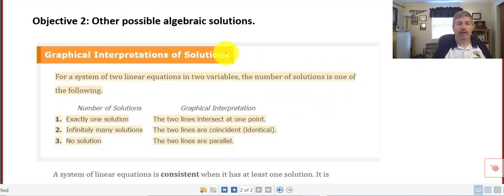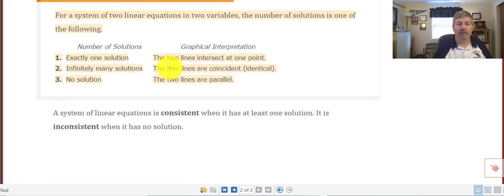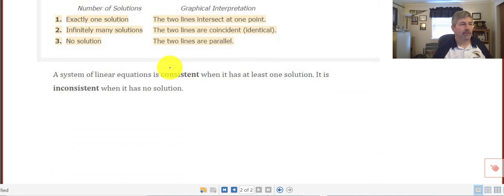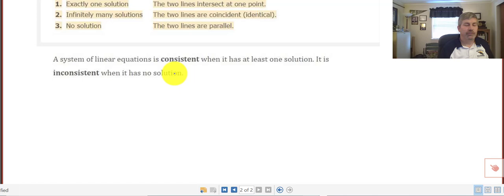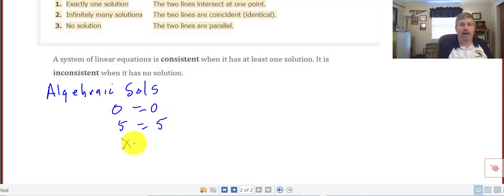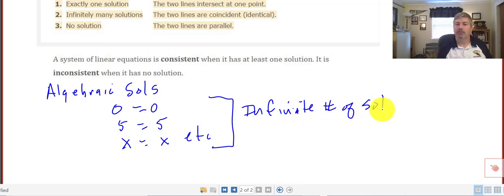We've got our other possible algebraic solutions with graphical interpretations that we saw in the previous video. But there are other possible solutions that you can get algebraically. You could get something like 0 equals 0 or 5 equals 5 or x equals x. Those kinds of answers will lead to infinite number of solutions. Graphically, those would be overlapping lines where there's many, many more infinite number of solutions.